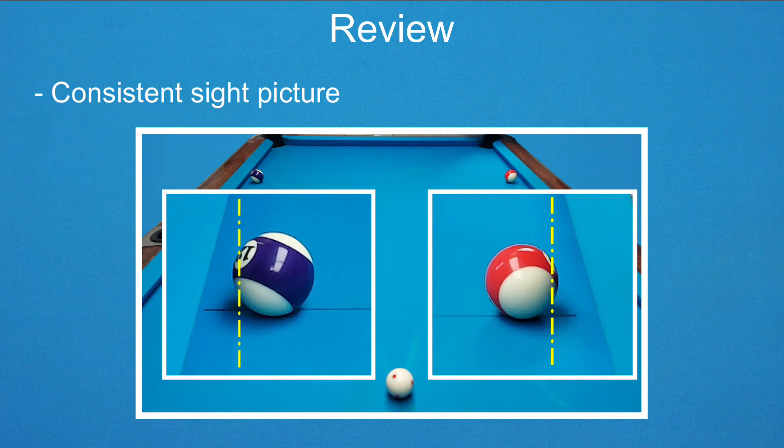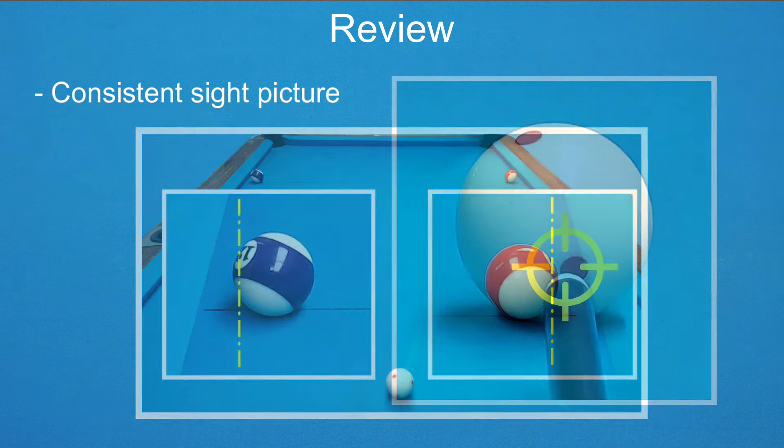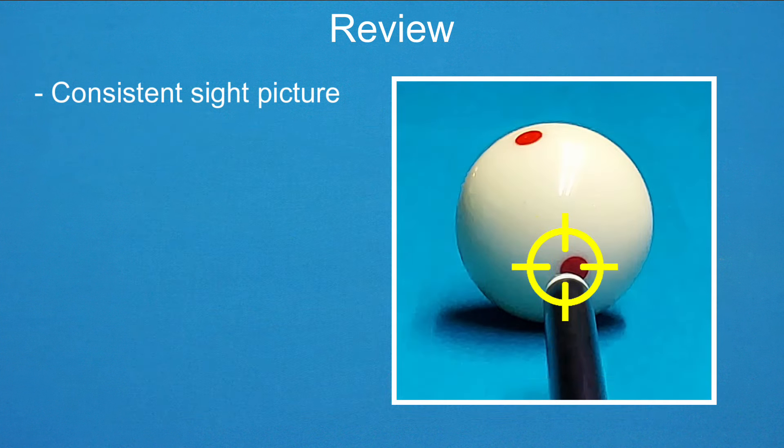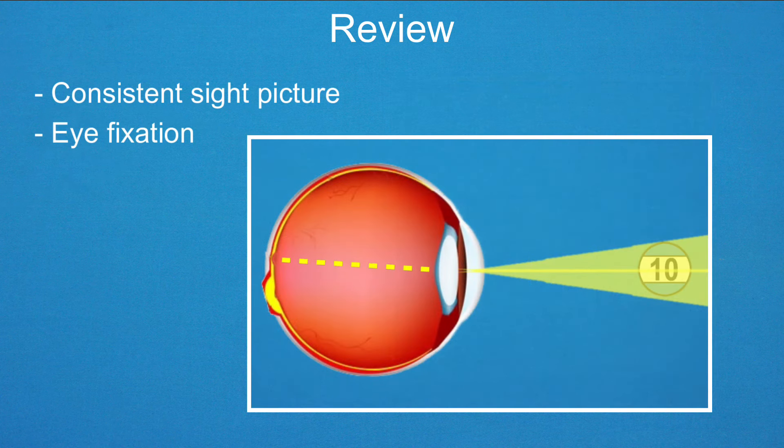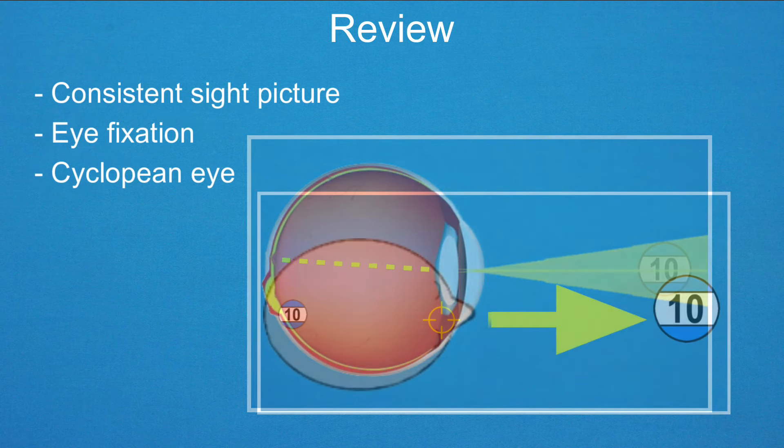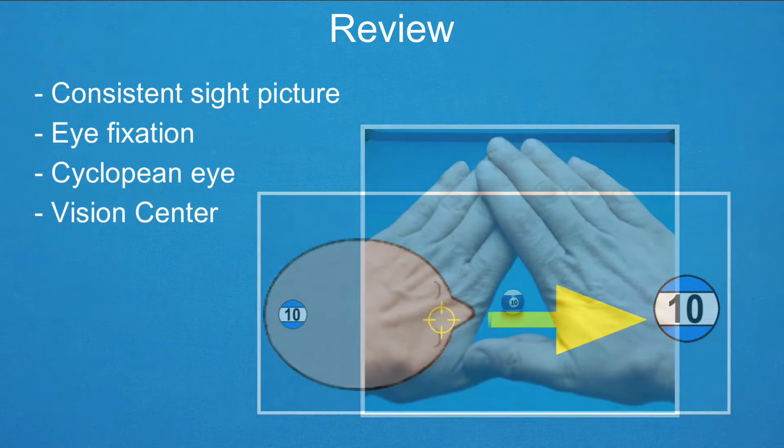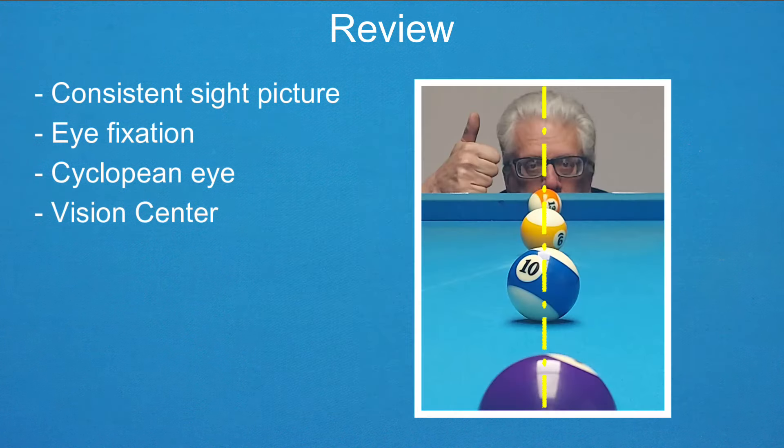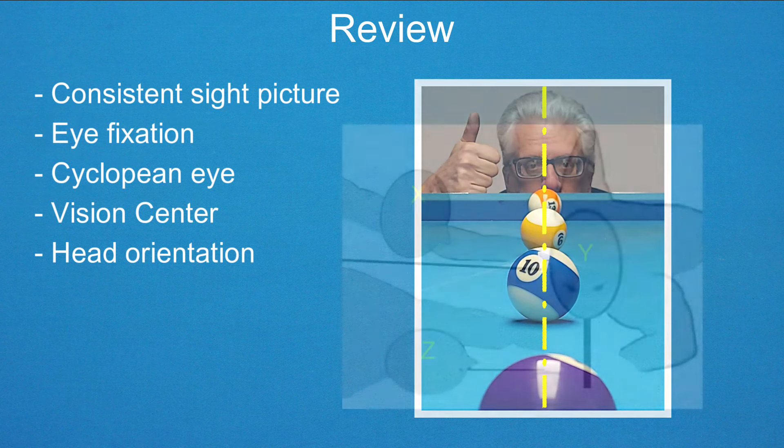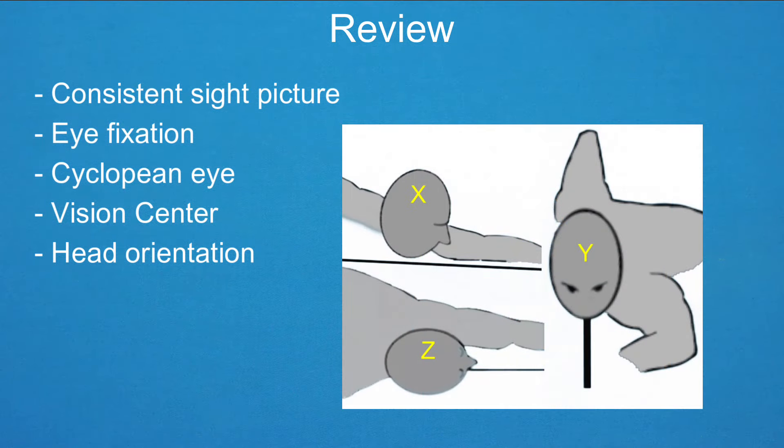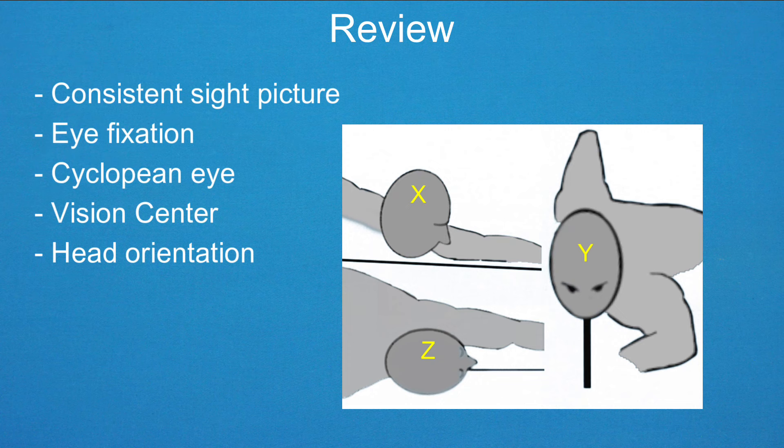We learned that good vision center alignment is necessary for acquiring a consistent sight picture when cutting balls to the left and right, and for striking the cue ball in the center or precisely where you intend. Just one small part of your retina is responsible for detailed focus where your vision fixates. Your cyclopean eye or vision center is usually near your dominant eye. We learned how to find your dominant eye and vision center, and that aligning your vision center involves both placing it over your cue stick and proper head orientation.